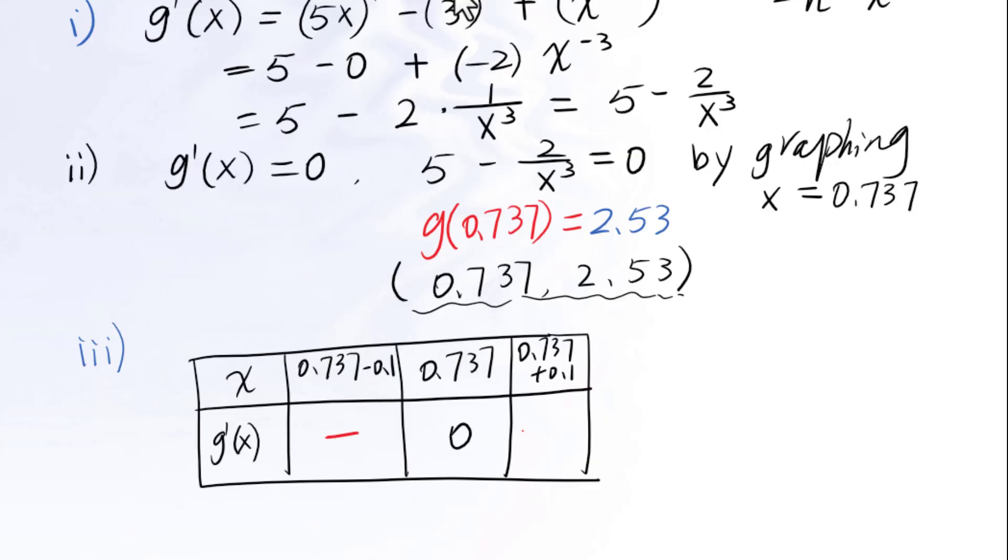This is negative, this is positive. Then we can draw the diagram. Negative means decreasing function. Positive means increasing function. So we could say there is a local minimum at x equals 0.737. So 0.737, 2.53 is the local minimum point.